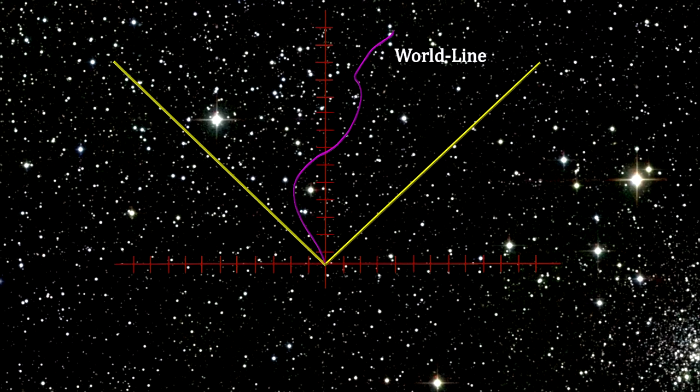It's called the world line and can be anywhere inside the light cone. In this representation, world lines have to remain between the two arms of the light cone, because nothing can travel faster than the speed of light.